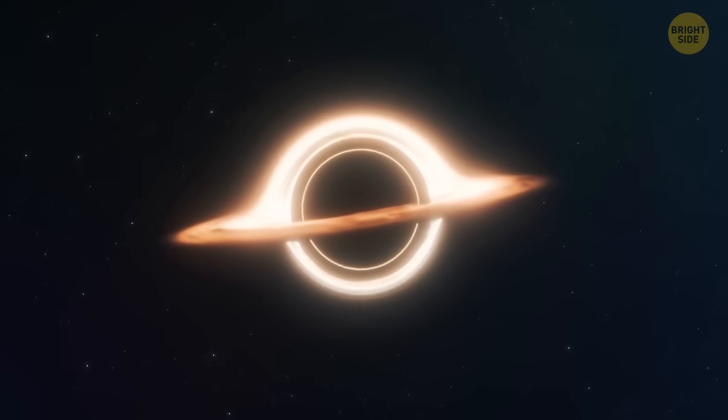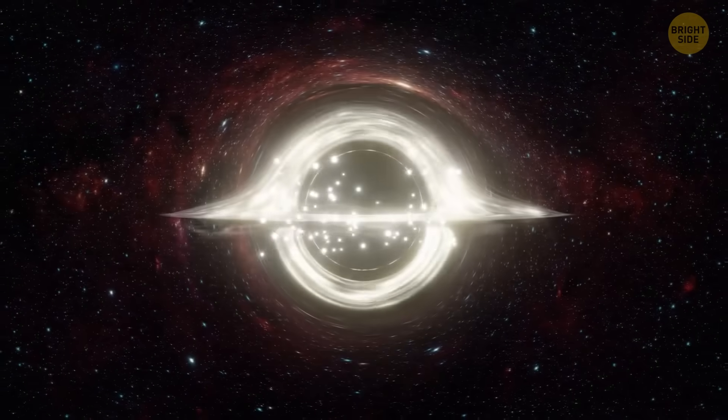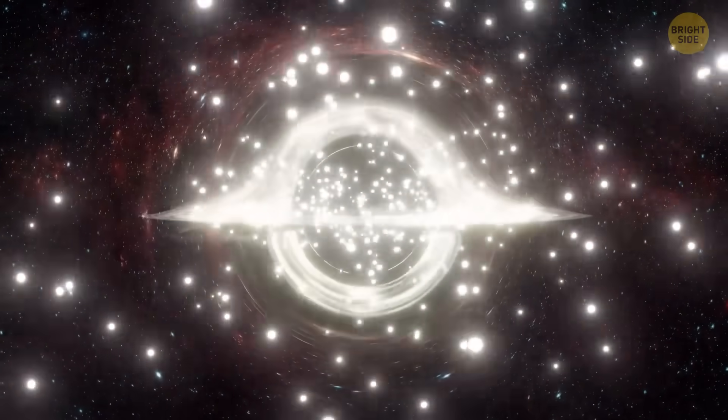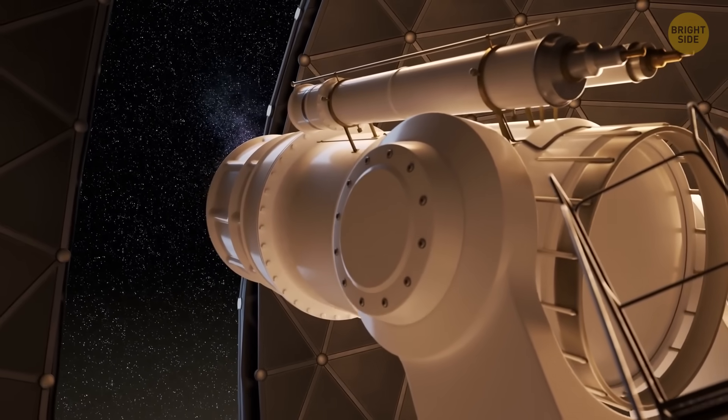There's also this sci-fi-level theory that some black holes might be paired with opposite twins, called white holes. A white hole basically spits stuff out instead of sucking it in. Together, a black and a white hole could form a wormhole tunnel. But no one's found a white hole either, yet.